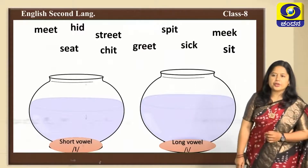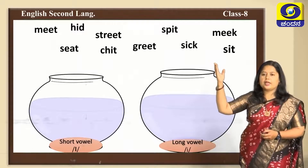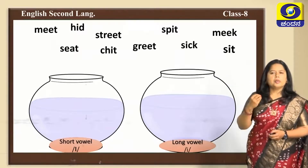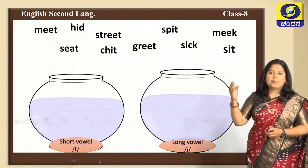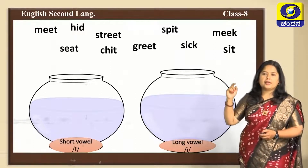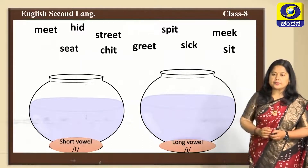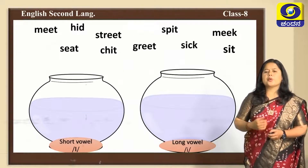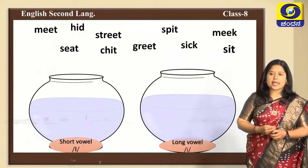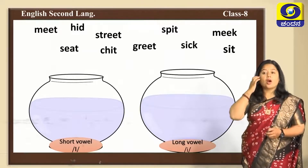Here is an activity for you with two parts. You can check the pronunciation of the words: meet, hid, seat, street, chit, sick, greet, spit, meek, and sit. Can you make out the difference in pronouncing these words? We are not going with the spelling in this activity — going with the pronunciation, how it is audible to you. We can differentiate these words into two categories: short vowel words and long vowel words.